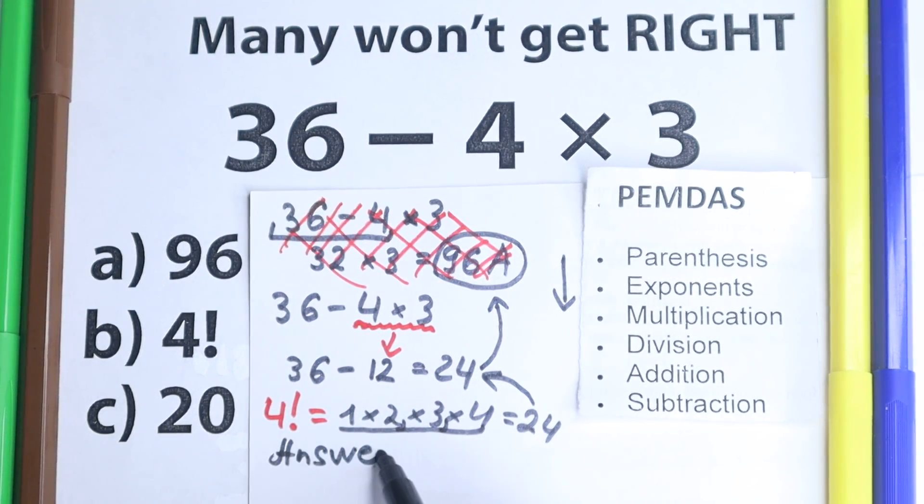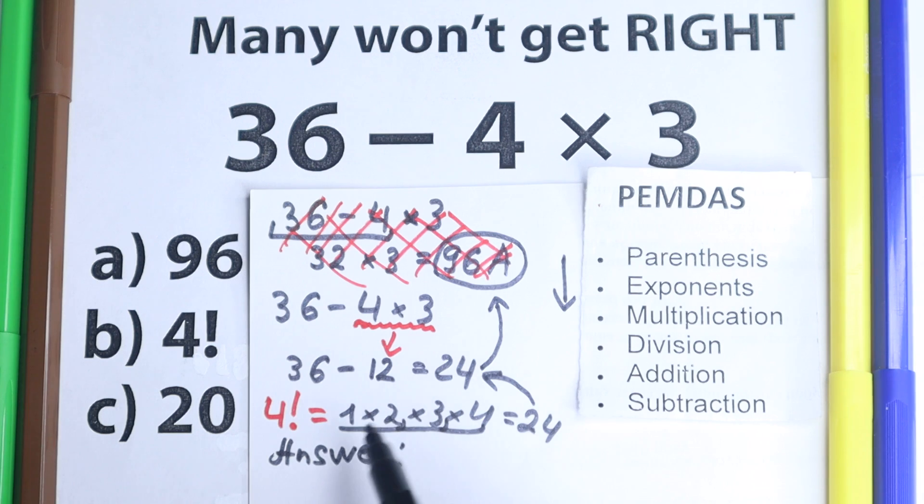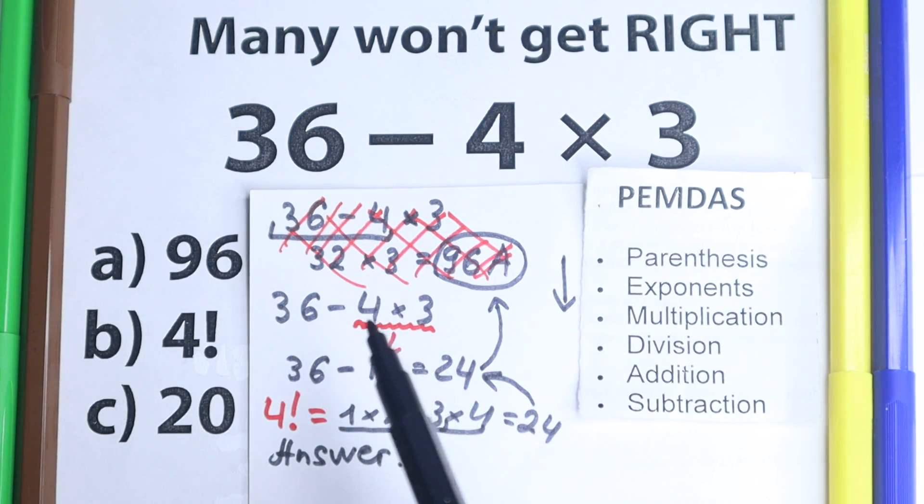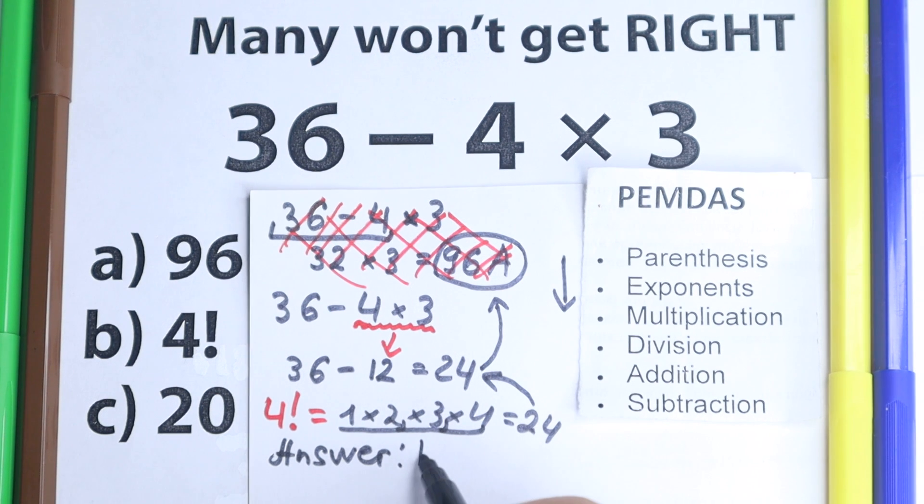Very tricky problem, as you can see, a lot of students solve it wrong, many won't get right because of this factorial trick right here. So option B is a correct answer to this question. I hope your answer is the same as mine, but if you made this error, I'm happy you made this because you won't make this error again.